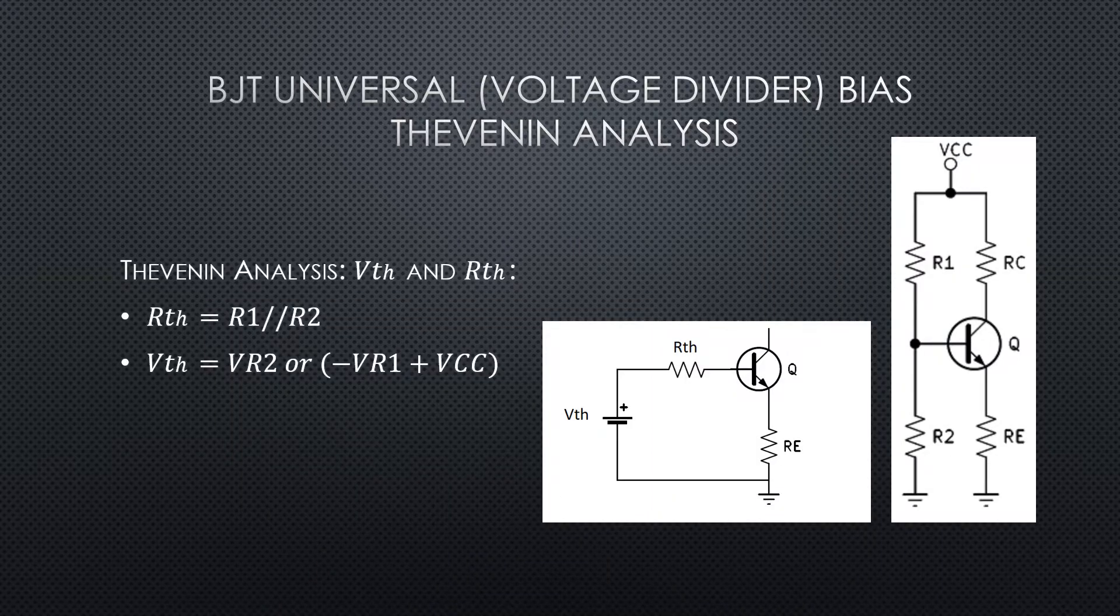So if we've got the base and emitter pulled as a load, for R Thevenin we want to find the equivalent resistance from those two points. So basically the base all the way to reference.